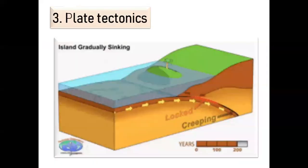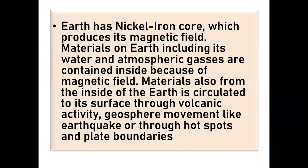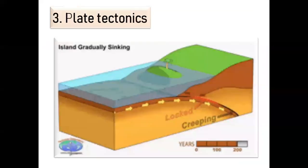Next is plate tectonics. Plate tectonics is the theory that Earth's outer shell is divided into several plates that glide over the mantle — the rocky inner layer above the core. The plates act like a hard and rigid shell compared to Earth's mantle, which contributes to the formation of islands.